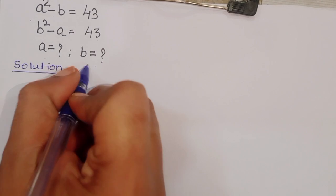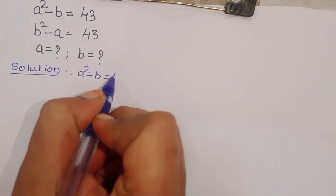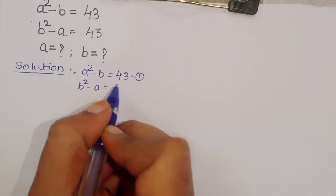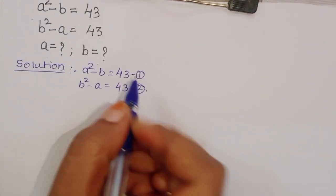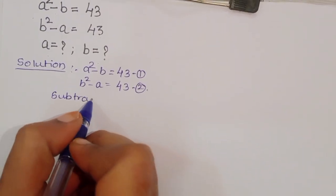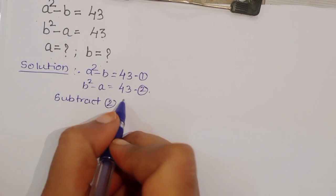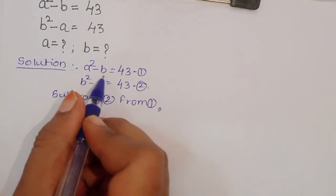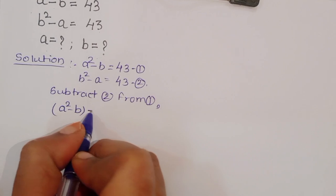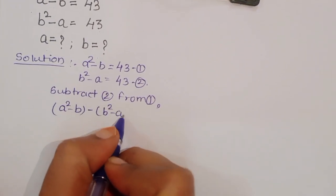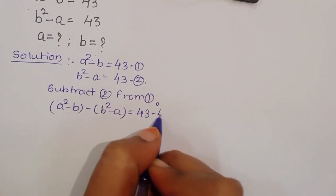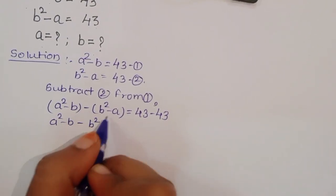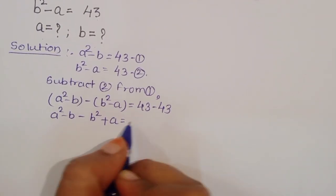First, what is given here: a squared minus b is equal to 43 — this is equation 1. Next, b squared minus a is equal to 43 — this is equation 2. Now subtract equation 2 from equation 1. We will get: a squared minus b minus (b squared minus a) is equal to 43 minus 43. So a squared minus b minus b squared plus a is equal to 0.